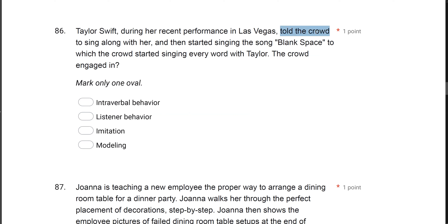Taylor Swift told the crowd to sing along — she gave them a receptive instruction, a verbal SD. The crowd started singing every word with her. Since their behavior was evoked by a verbal SD — 'everybody sing along' — it's not imitation. It's listener behavior. That's the key difference: pure imitation is evoked by a nonverbal SD, like a model. Had Taylor just started singing without saying anything, that would be imitation. But she said 'sing along with me,' so the crowd engaged in listener behavior.